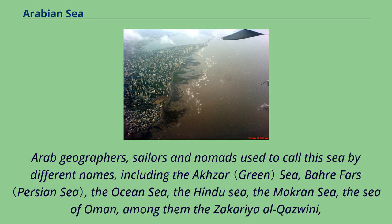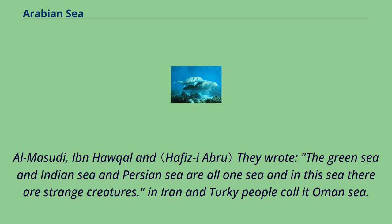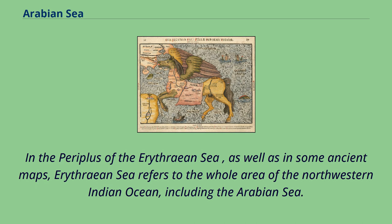Arab geographers, sailors, and nomads used different names for this sea, including the Aksar Sea, Bar Fars, the Ocean Sea, the Hindu Sea, and the Makran Sea. Among them, Zakariya al-Qazwini, al-Masudi, and Ibn Hawqal wrote that the Green Sea, Indian Sea, and Persian Sea are all one sea, and that strange creatures live in it. In Iran and Turkey, people call it the Oman Sea. In the Periplus of the Erythraean Sea and in some ancient maps, the Erythraean Sea refers to the whole area of the northwestern Indian Ocean, including the Arabian Sea.